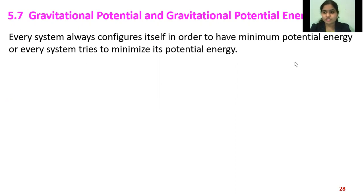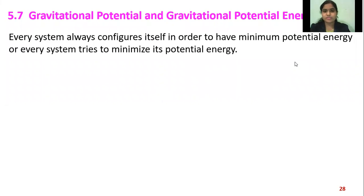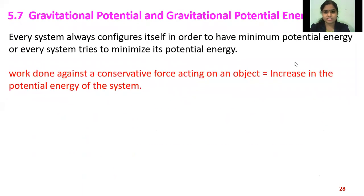Potential energy in general is considered due to the position of an object. Every system always configures itself in order to have minimum potential energy — every system tries to minimize its potential energy. For example, an object on the surface of Earth has potential energy equal to zero, which is the minimum. If height increases, then its potential energy will increase. Work done against conservative forces acting on an object is equal to the increase in potential energy of the system.